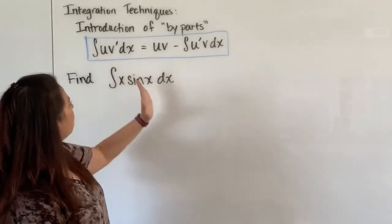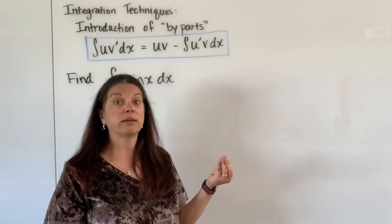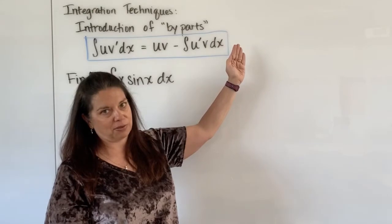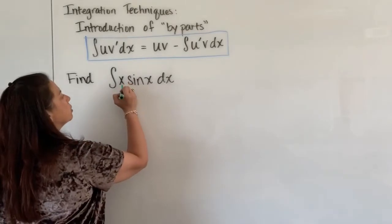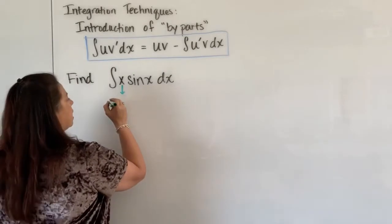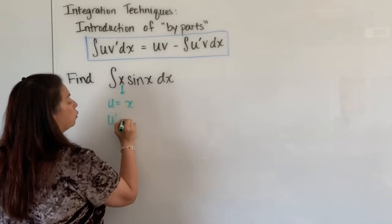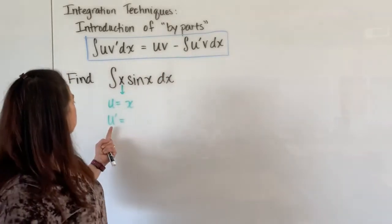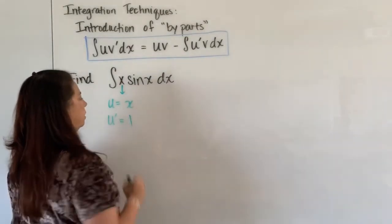The second component or the second function sine x will be matched up with my v prime. If I can do that kind of matching here and identify what the u's and the v primes and subsequent v's are, from there I can fill in the rest of this part of the formula. So that's going to be our first plan of attack. We're going to start here by letting our x be our u. So u is equal to x and that's going to mean that our u prime, because we also need to know what the u prime is.